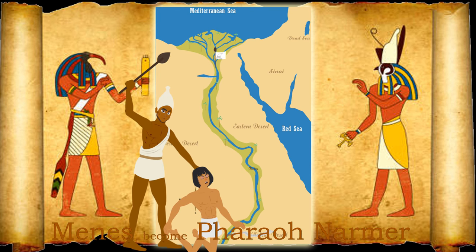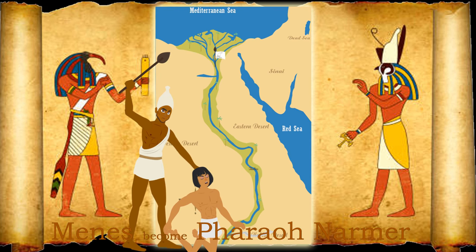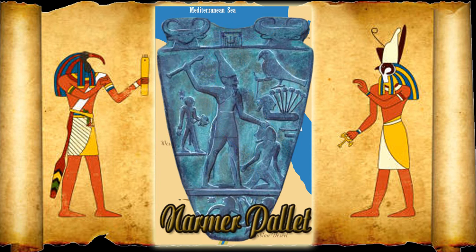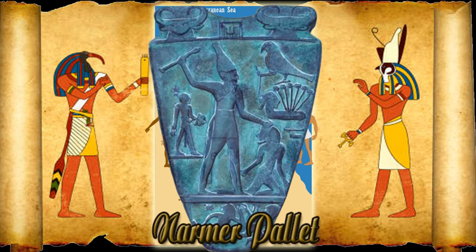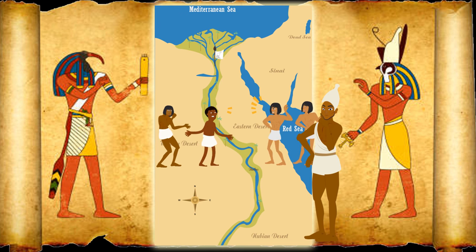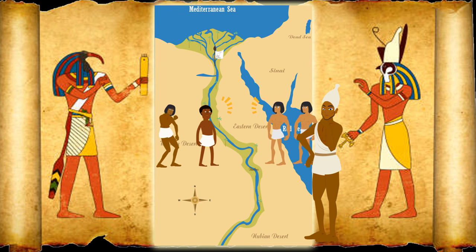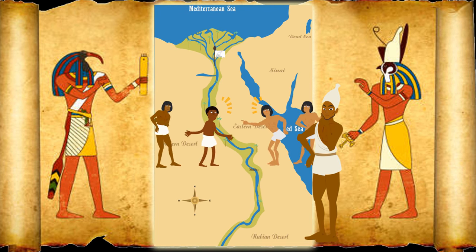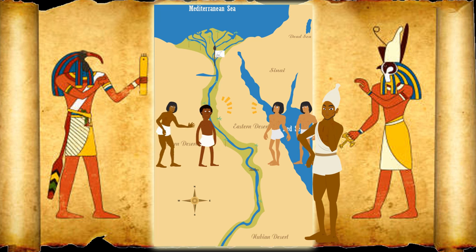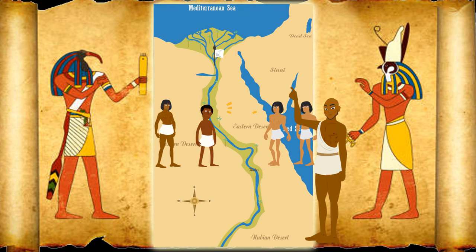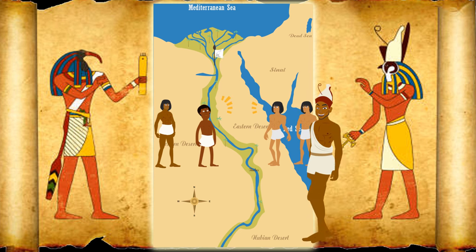These two regions were combined into one country, but the people kept fighting amongst themselves. To help his people think of themselves as one, the king had a special crown made — a double crown combining the red and white crowns, symbolizing the unity of ancient Egypt.